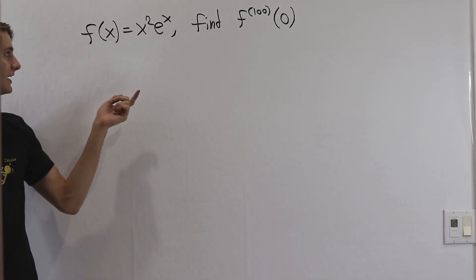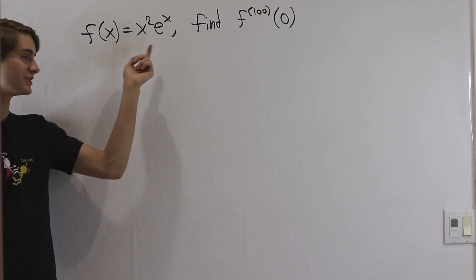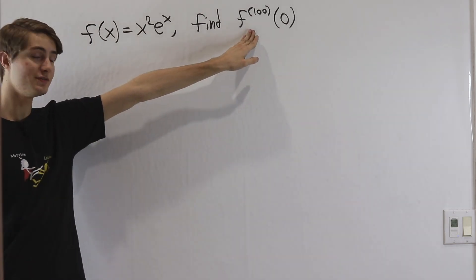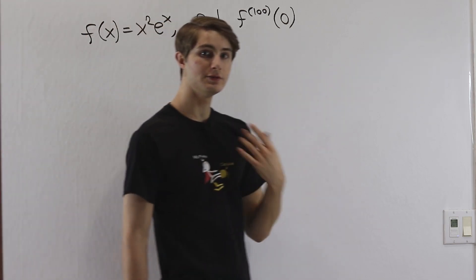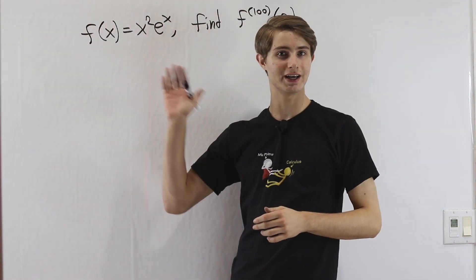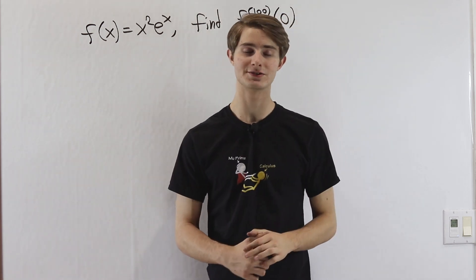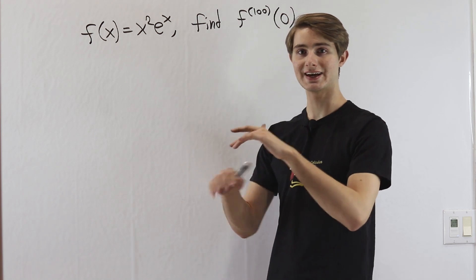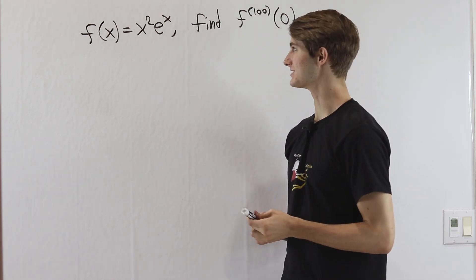We are going to do this little calculus problem. If f of x equals x squared times e to the x, we want to find the one hundredth derivative of f at the value of zero. You might try starting out by just differentiating x squared e to the x a couple times and looking for patterns, but there's actually a clever way to do this that lets us sidestep all of that ugly differentiation.